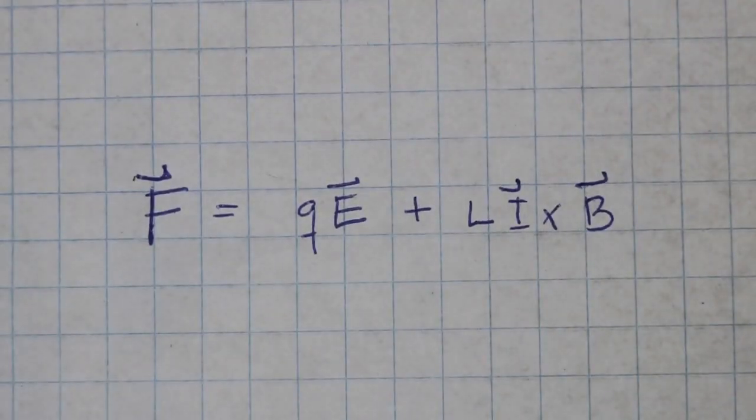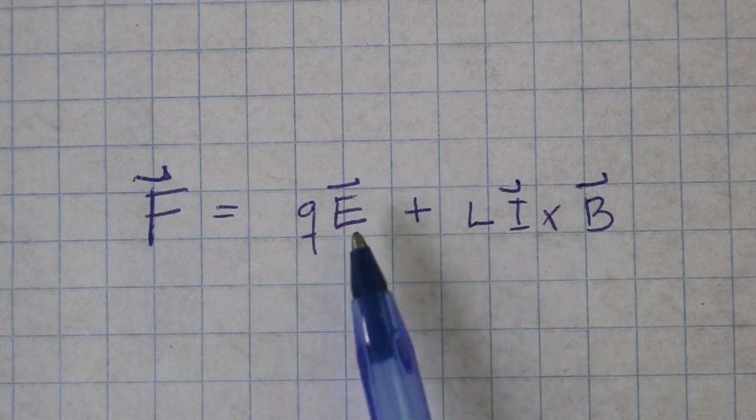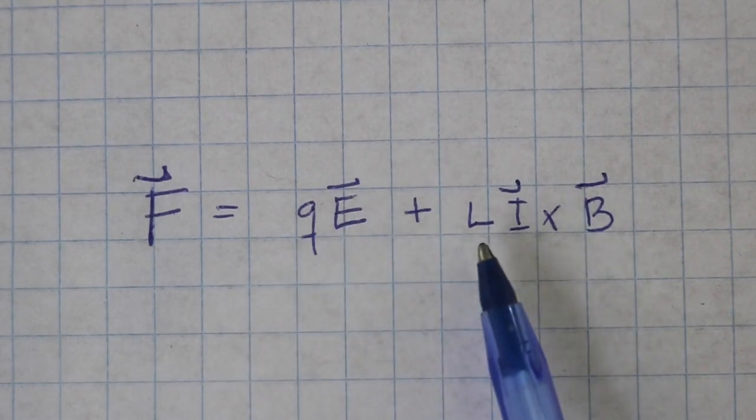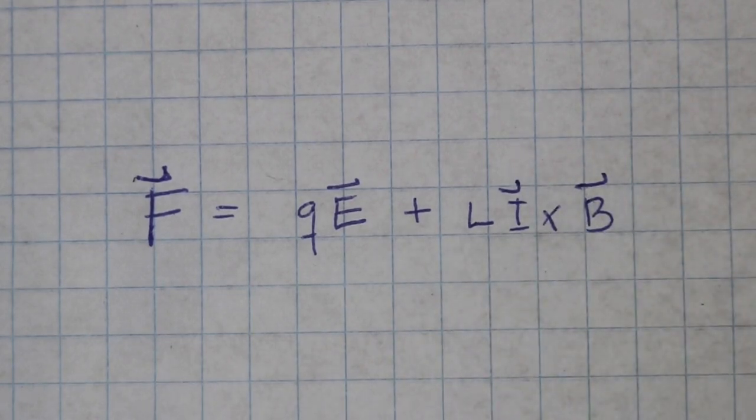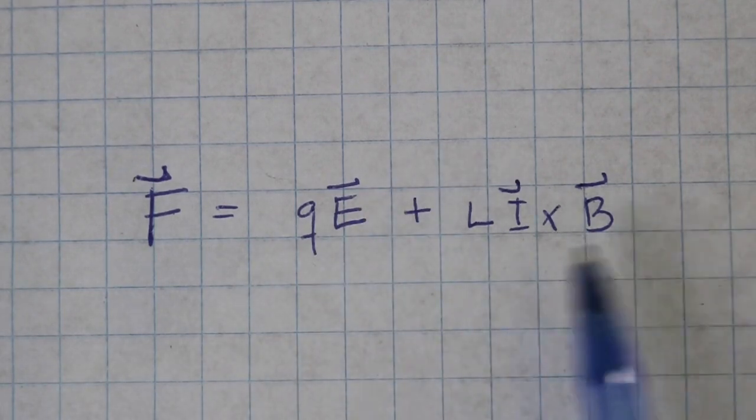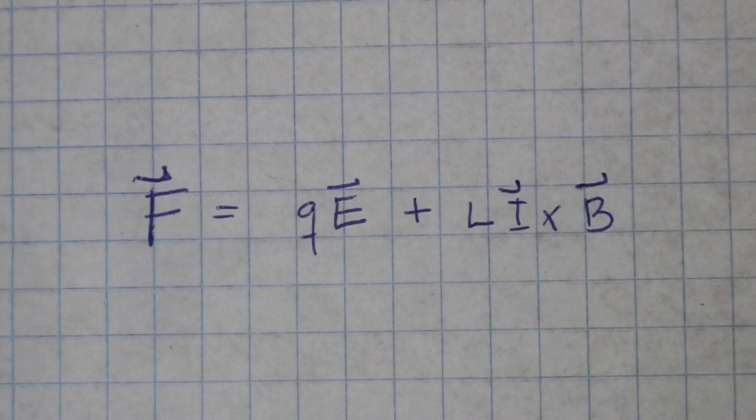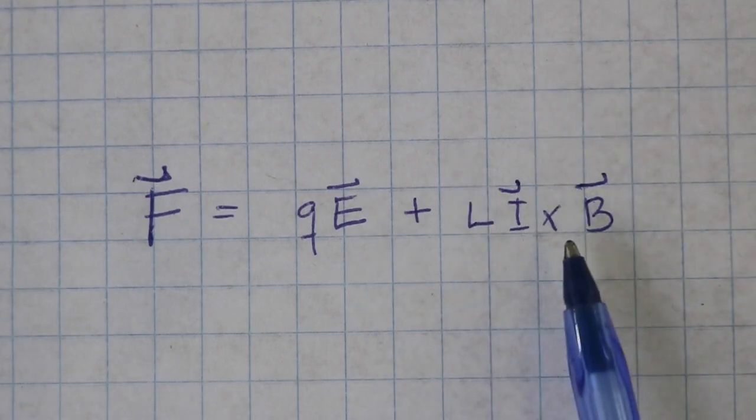This is the mathematical expression for the Lorentz force. It is equal to the charge times the electric field plus the length of the wire and the current times the magnetic field. In this case we are not dealing with electric fields, so this part is the one that matters for our purpose. Remember these are vector quantities, so this is a cross product.